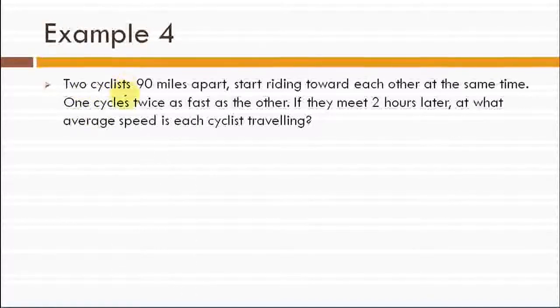Two cyclists 90 miles apart. This is cyclist A here and we have another cyclist over there. The distance is 90 miles.